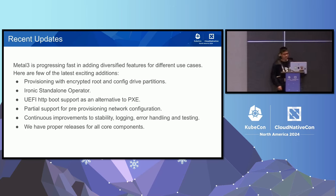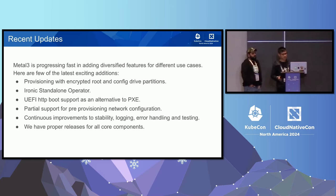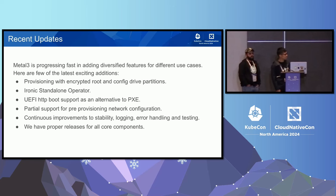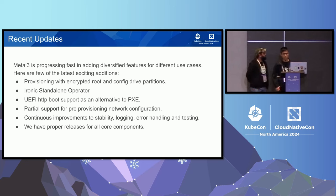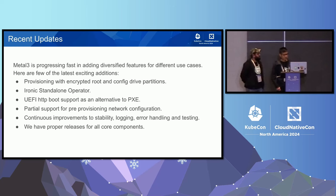MetalCube is already production-ready, but we are still working very hard to make it work with as many use cases and features as possible. Recently we have introduced provisioning with encrypted root and config drive partitions, an Ironic standalone operator which is supposed to make configuring and installing Ironic much easier — this addresses a common complaint that Ironic is difficult to understand. We also added UEFI boot support and partial support for pre-provisioning network configuration.